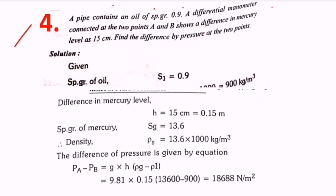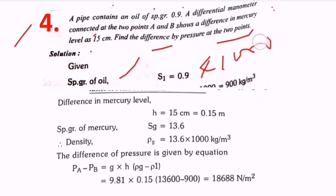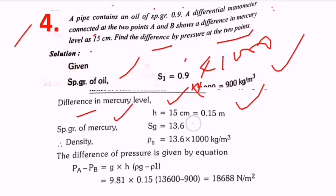Oil specific gravity 0.9 converts to density 900 kg/m³. The mercury level difference h is 15 centimeters, or 0.15 meters. Specific gravity of mercury is 13.6, giving mercury density of 13,600 kg/m³. The pressure difference formula is: pa minus pb equals g times h times (rho mercury minus rho oil).